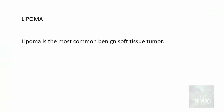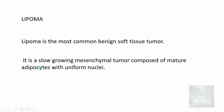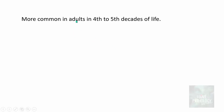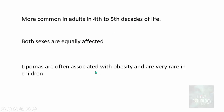What is lipoma? Lipoma is the most common benign soft tissue tumor. It is a slowly growing mesenchymal tumor composed of mature adipocytes with uniform nuclei. Note that these are mesenchymal tumors and benign tumors. Most common in adults in the fourth to fifth decades of life; both sexes are equally affected, and it is often associated with obesity and very rare in children.